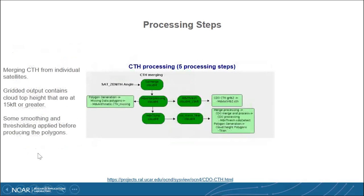For the CTH, we basically have the final product — we do some interpolating and thresholding. For the grids, we only output data at 15,000 feet and above, and there are additional steps on the cloud top height to improve the merging and production of the polygons.